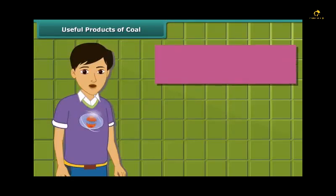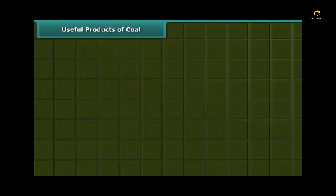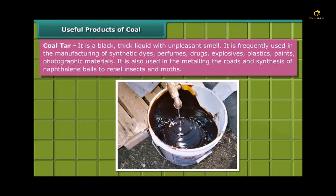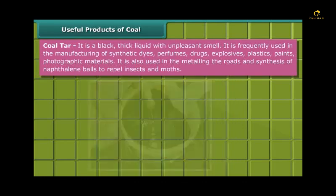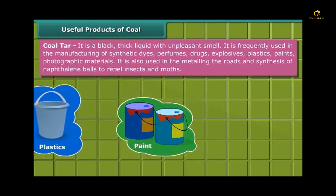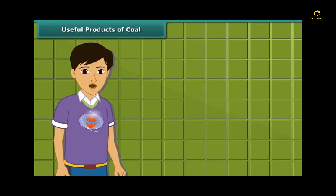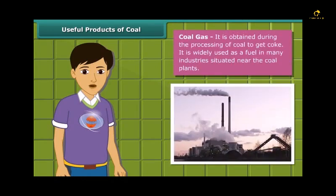First, let us know about coke. Coke is a tough, porous, and black-colored substance, mainly used in the manufacturing of steel and extraction of many metals. Coal tar is a black, thick liquid with an unpleasant smell. It is frequently used for manufacturing synthetic dyes, perfumes, drugs, explosives, paints, plastics, and photographic materials. To obtain coke from coal, coal gas is produced. In many industries located near coal plants, it is used as a fuel.